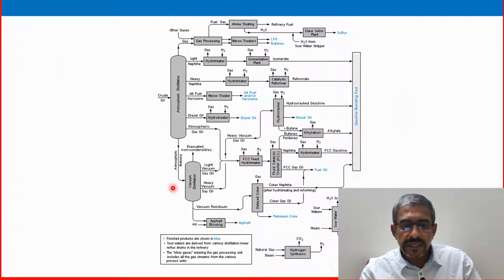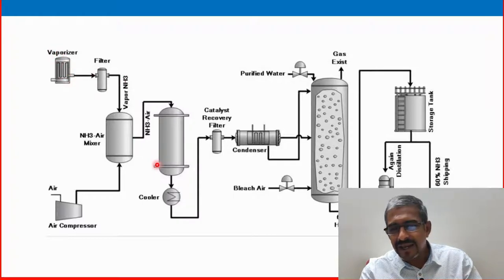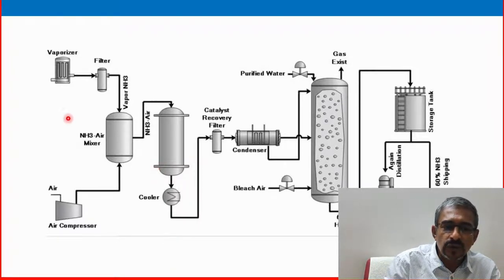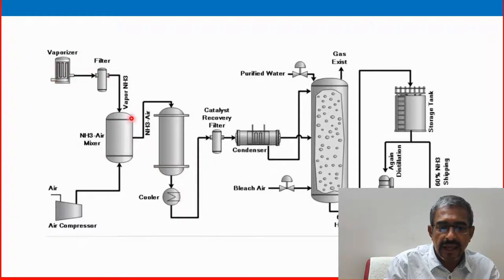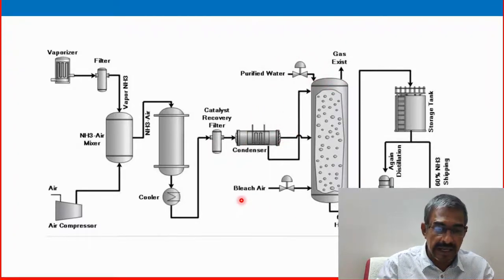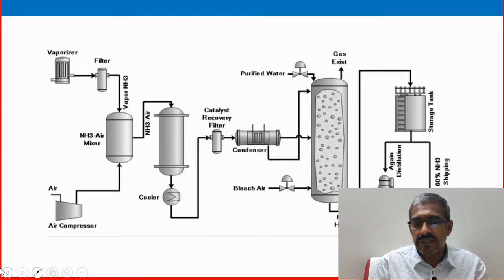Another one. Look into this one. Vaporizer. See, here it is using like look like a 3D image. That also possible, simplified. But the thing is the flow should be clearly understanding. A newcomer, if a new person to read this one, at least he has to understand that vaporizer is there, filter is there, nitrogen air mixer is there, cathodic recovery chamber is there, condenser is there, some valve is there. Air compressor is there like that one. He should clearly understand that this is the process, this type of equipments are there in the field.